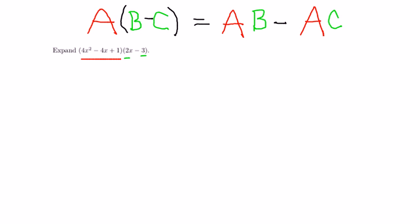The distributive rule will tell us that A times B minus C is AB minus AC. Now I'm going to stop with the color coding, but hopefully it will help you keep track of the fact that 4x squared minus 4x plus 1, even though it has three terms added together, I'm going to treat them as one team in the first step.